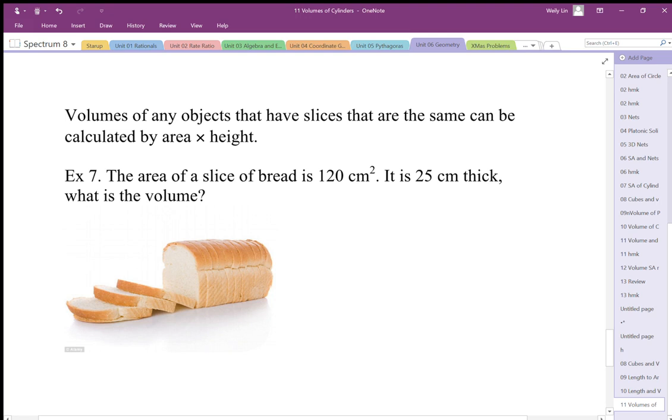In this case here, if I have this slice of bread, the area of the slice of bread is 120, so this area is going to be 120 centimeters squared. Every slice is the same, so I'm going to give that area a thickness of 25.